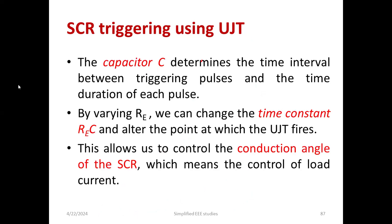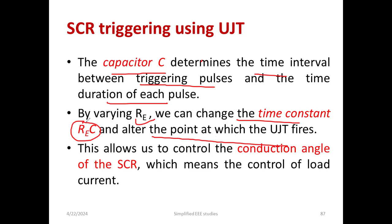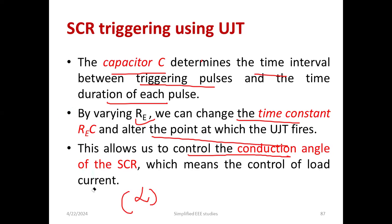Regarding the significance of passive elements: the capacitor C determines the time interval between triggering pulses and the time duration of each pulse. By varying RE, we can change the time constant RE × C and alter the point at which the UJT fires. The turn-on time can be adjusted by adjusting the RC value. This allows us to control the conduction angle of the SCR — that means the firing angle alpha can be controlled. There is one equation I will be showing you. I have also conducted a lab experiment and will be demonstrating it in the next video.